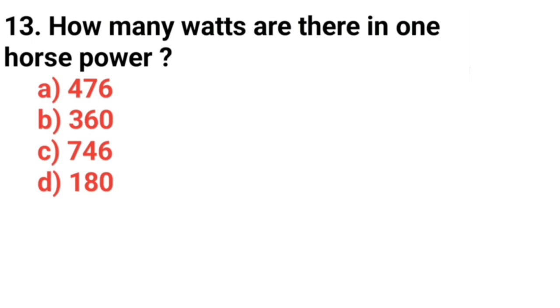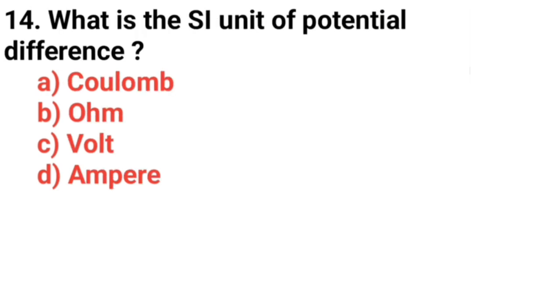Question number 13, how many watts are there in one horsepower? Answer option C, 746. Question number 14, what is the SI unit of potential difference? Answer option C, Volt.